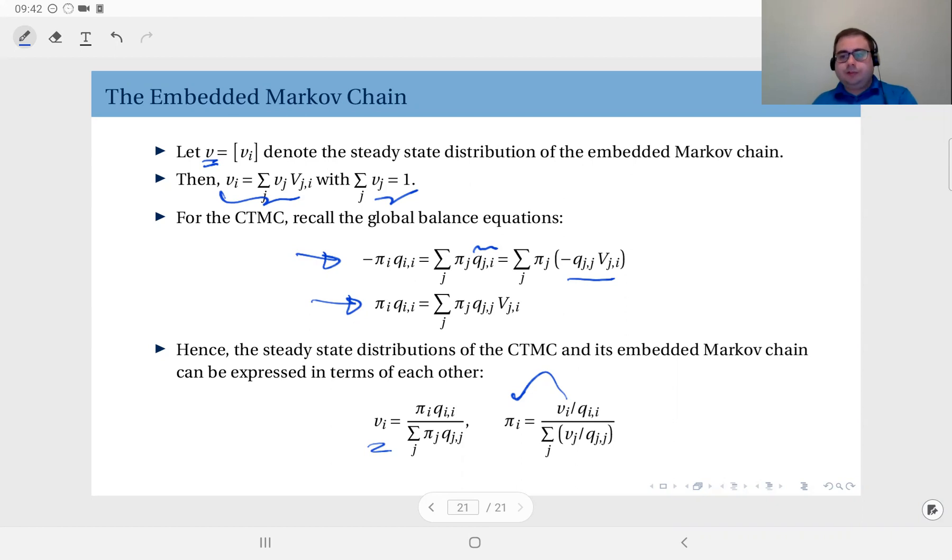Recall the conditions for being ergodic: we call a Markov chain ergodic if all states are positive recurrent and the Markov chain is irreducible and aperiodic. In this case, you are guaranteed to have a